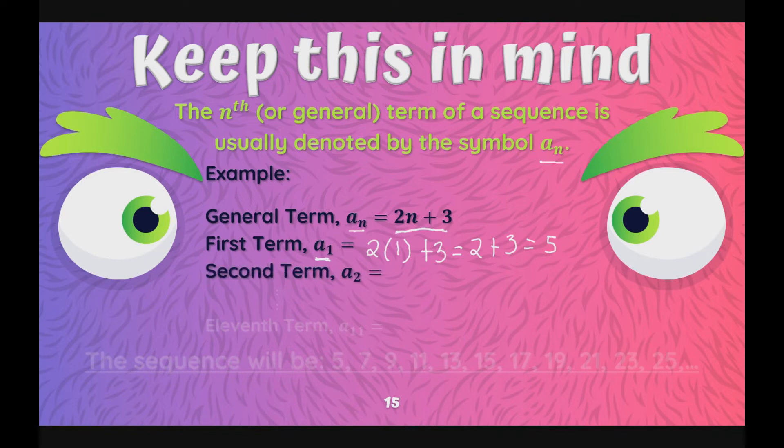Now, let us proceed to a sub 2. Our a sub 2 will be papalitan lang natin yung n ng 2 katulad dito. So, dito sa part na ito, papalitan lang din natin ang 2, papalitan ng 2 ang n. So, magiging 2 times 2 plus 3 which is equal to 4 plus 3 which is equal to 7. Ayan.